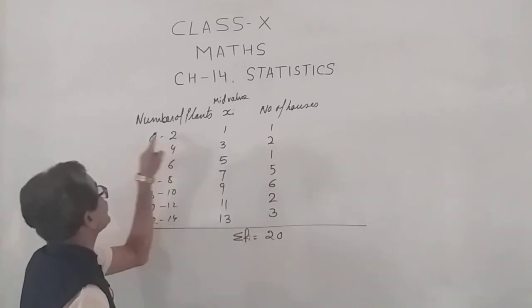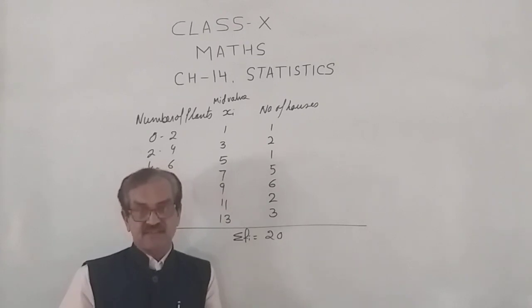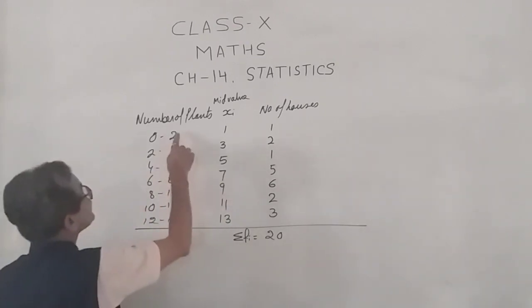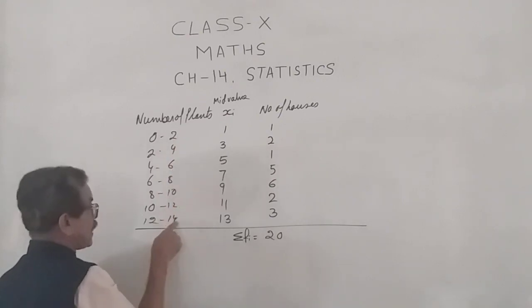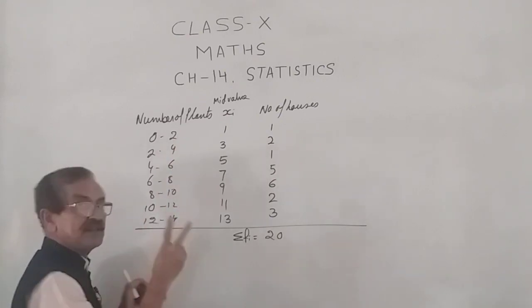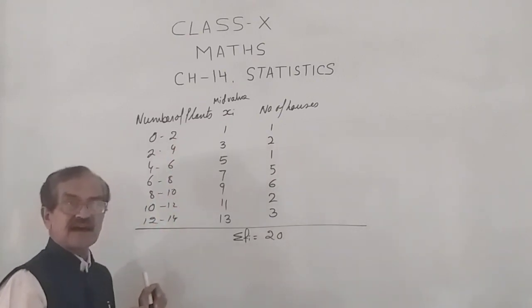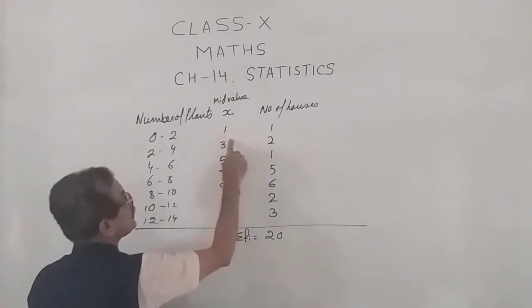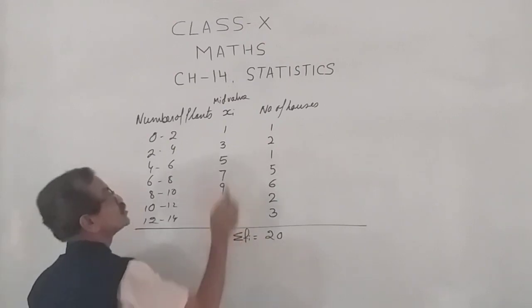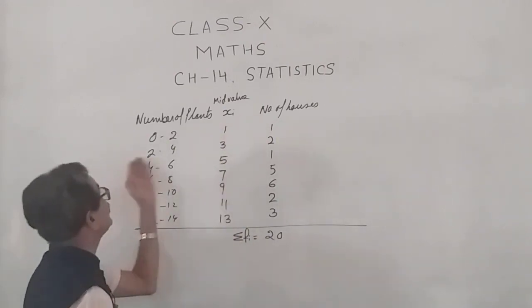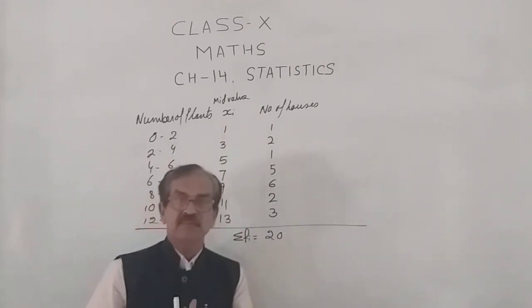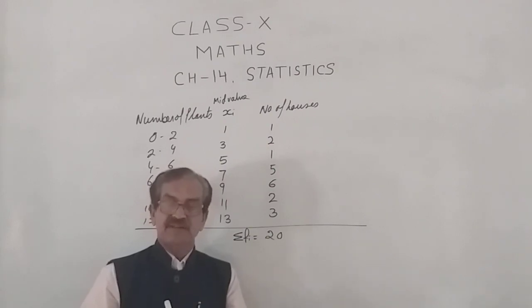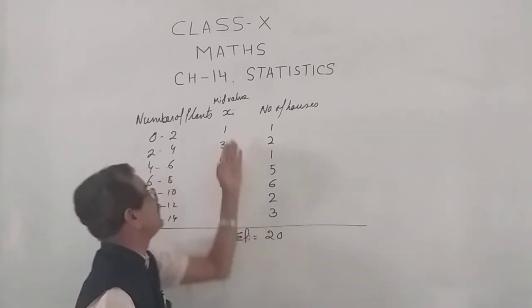Upper limit minus lower limit is called the class size or the class height or the class width. Since the difference between the upper and lower limit is the same, that is 2, we say the class size is 2. The difference between the class marks is also 2. So while filling this data, we need not calculate each time the average of the upper and lower limit, but simply add the class size to each class mark.